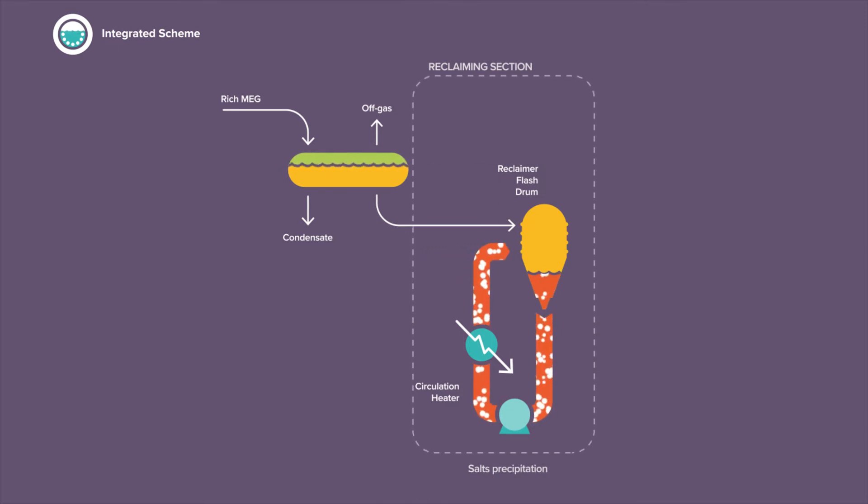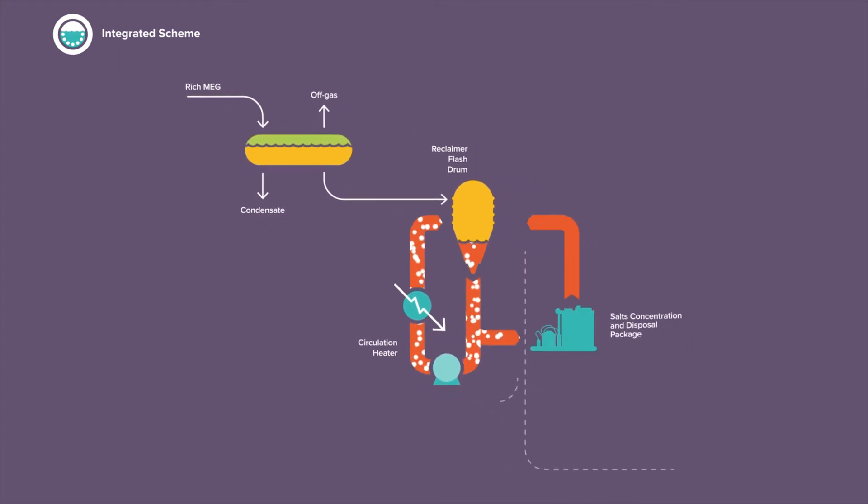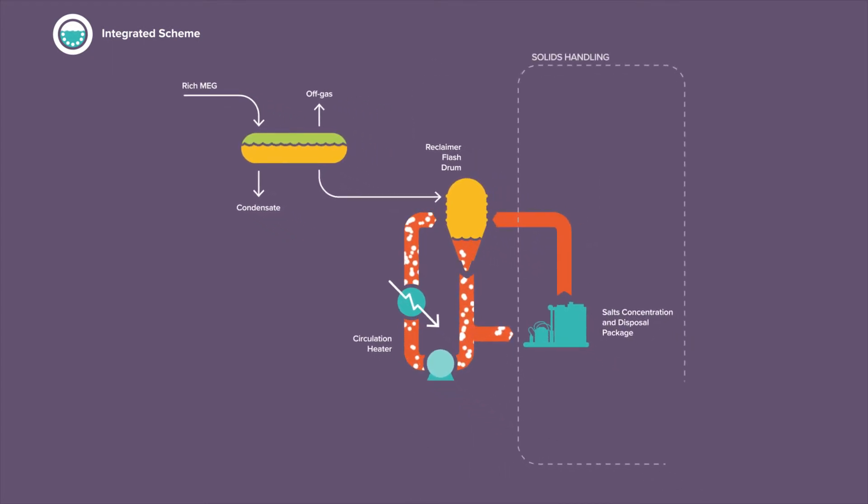In the third section, called solids handling, the monovalent and divalent salts in a solid state are removed thanks to a centrifuge. A dry salt cake for disposal is produced.